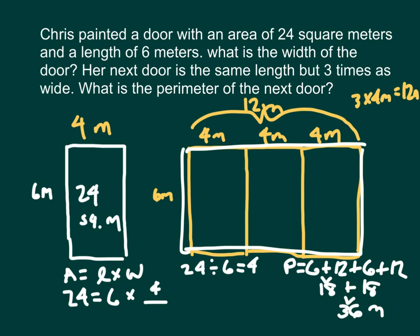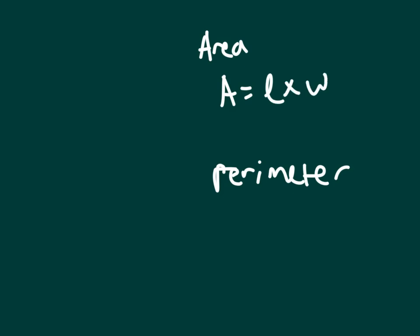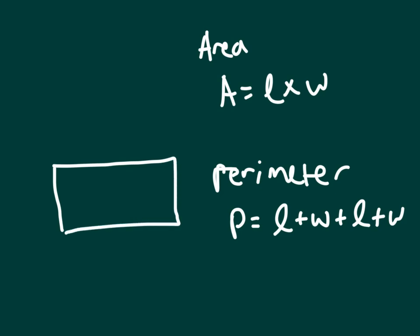And we would write out a statement there where we say that the perimeter of the next door is 36 meters. One of the keys when working through these problems is to remember the formulas for area and also the formulas for perimeter. Formula for area is equal to length times width. The formula for perimeter is equal to length plus width plus length plus width. Another thing that is very helpful when you're working through these problems is to make sure that you are drawing a picture to help you work through those problems.